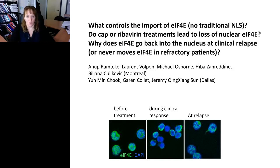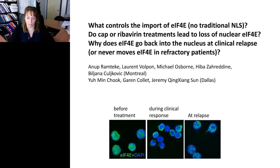To summarize: this is the patient who responded for two years — before treatment, during clinical response, and then at relapse, where we see reentry of nuclear 4E. The magnification is the same across all slides; notably these cells are slightly smaller at response, and we don't know why yet. This led us to ask several questions: what controls the import of nuclear 4E? Do cap or ribavirin treatments lead to a loss of nuclear 4E? And why does EIF4E go back into the nucleus at clinical relapse?